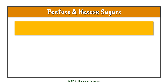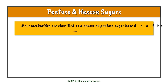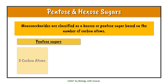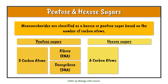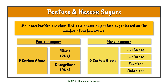So pentose and hexose sugars. Monosaccharides are classified as either hexose or pentose sugars depending on the number of carbon atoms. Pentose sugars are made up of five carbon atoms — examples include ribose, found in RNA, and deoxyribose, found in DNA. Hexose sugars have six carbon atoms, and examples include alpha glucose, beta glucose, fructose, and galactose.